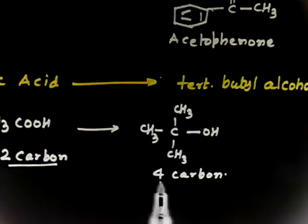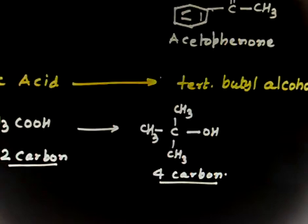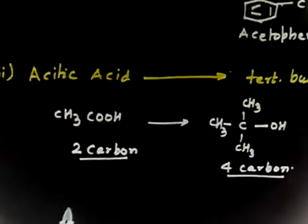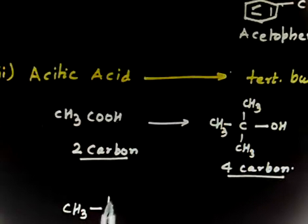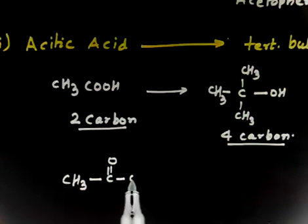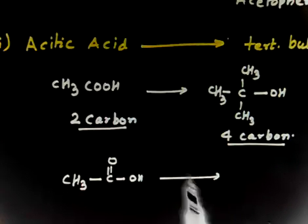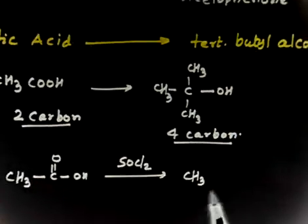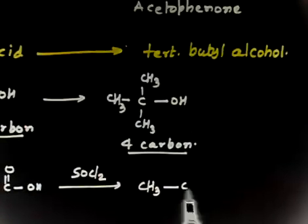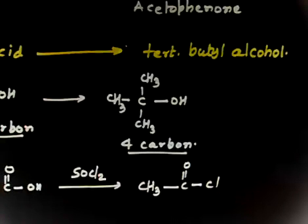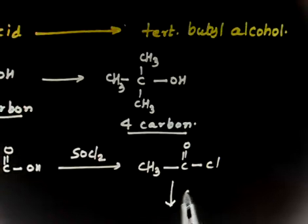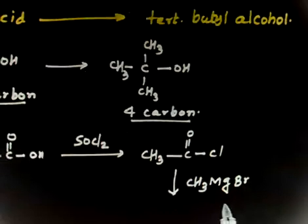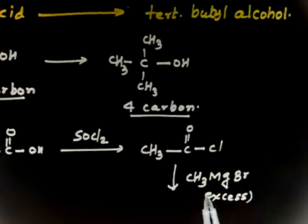Since you need to increase the carbon chain, you can use the Grignard reagent reaction. First, convert the acetic acid into an acid derivative using SOCl₂: reacting acetic acid with SOCl₂ gives you the acid chloride, CH₃COCl. Then treat this acid chloride with Grignard reagent CH₃MgBr — you must take it in excess, at least two moles.